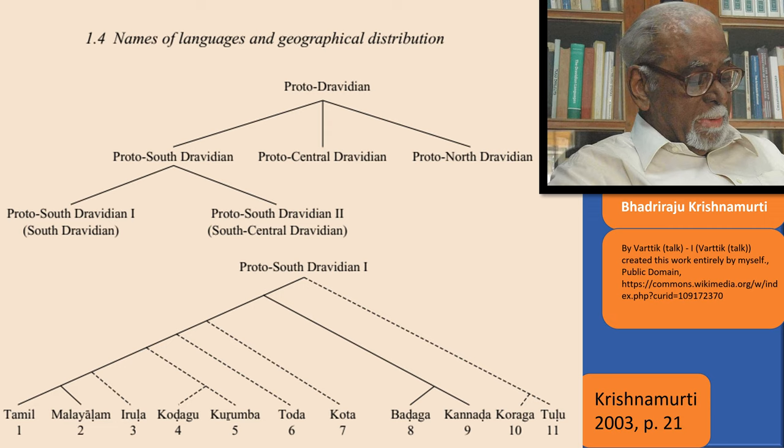In his 2003 work, he postulates that Proto-Dravidian split into Proto-South Dravidian, which became Proto-South Dravidian 1 and Proto-South Dravidian 2. As we can see here, Tamil is part of Proto-South Dravidian 1. The other Dravidian languages can be seen on this chart.